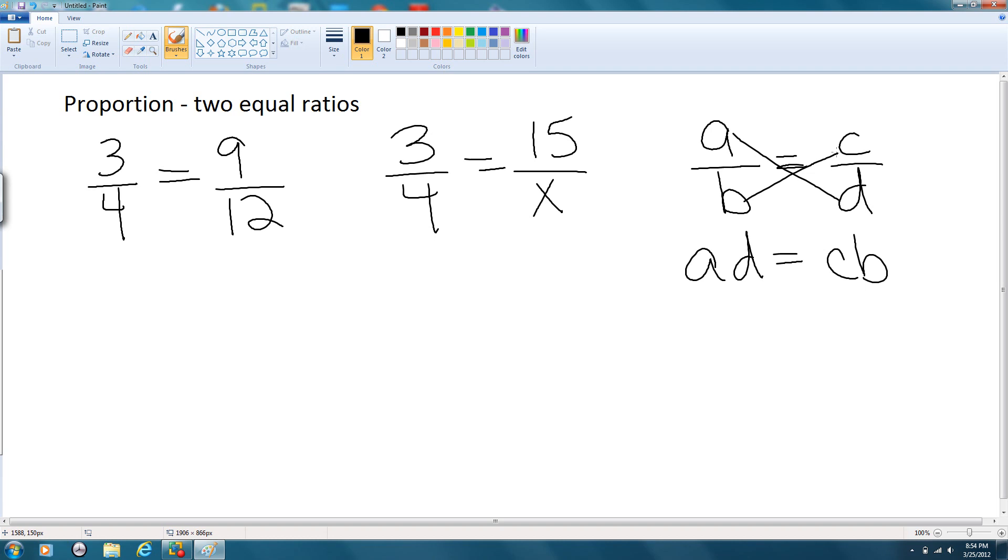You can figure this out on your own. A over B is equal to C over D, and we multiply first both sides by B and these cancel, and we get A is equal to CB over D. And then multiply both sides by D over here, and then we get what we were talking about.